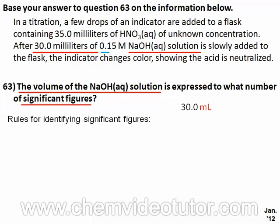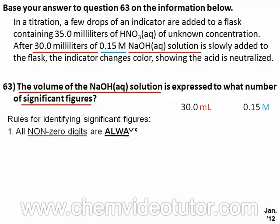The 0.15 M represents the concentration or strength of the NaOH solution, and we can use this measurement to illustrate the rules for significant figures as well. Rule number 1 says that all non-zero digits are always significant, so any number 1 through 9 is significant, like the 3 in the first measurement and the 1 and the 5 in the second measurement.